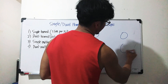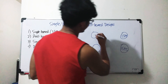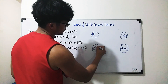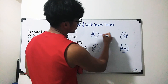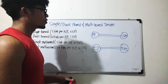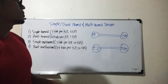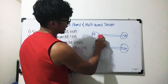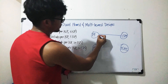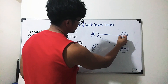So dual multi-homed looks like this: ISP one, ISP two, Enterprise router E1 and E2. Two or more links connected to two ISPs. This is the more practical design — having this kind of topology.